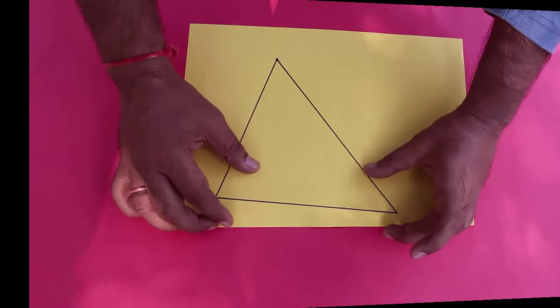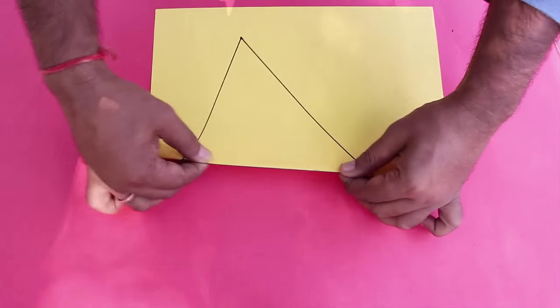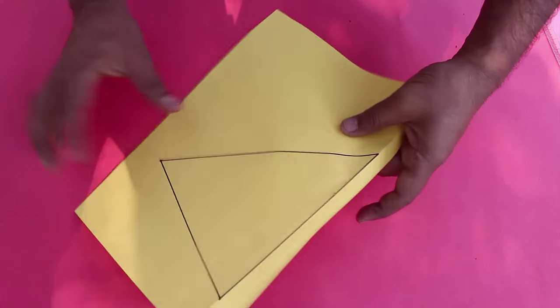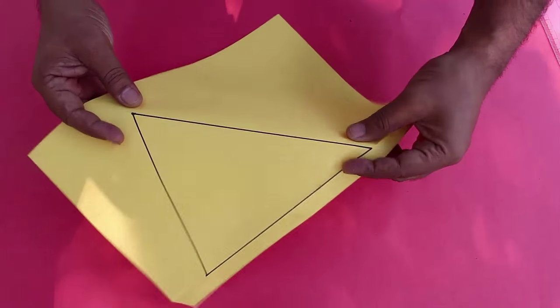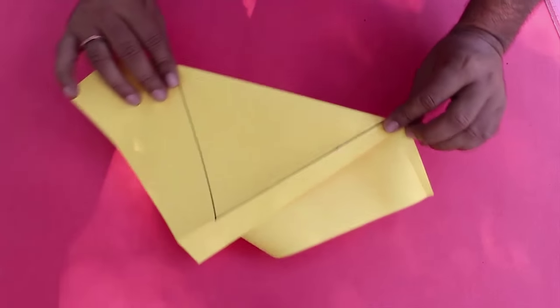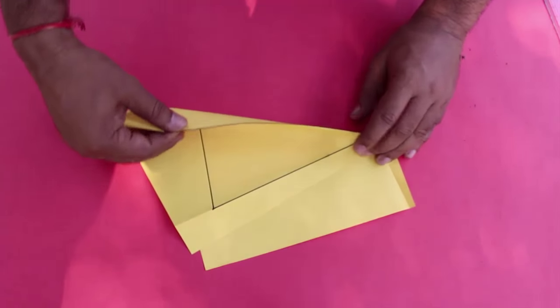First we will fold the base A of a triangle and then another side B. Then place the edge B on A and fold.